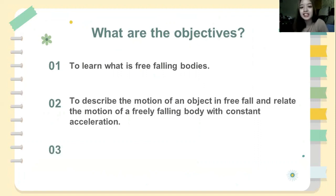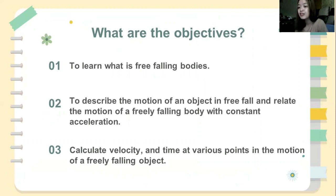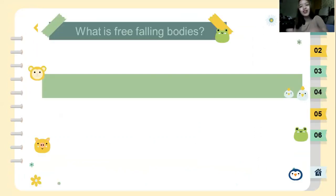And for number three is to calculate velocity and time at various points in the motion of a freely falling object. So what is free falling bodies?